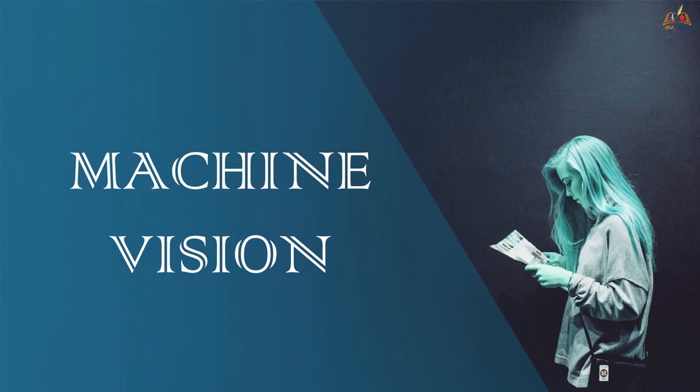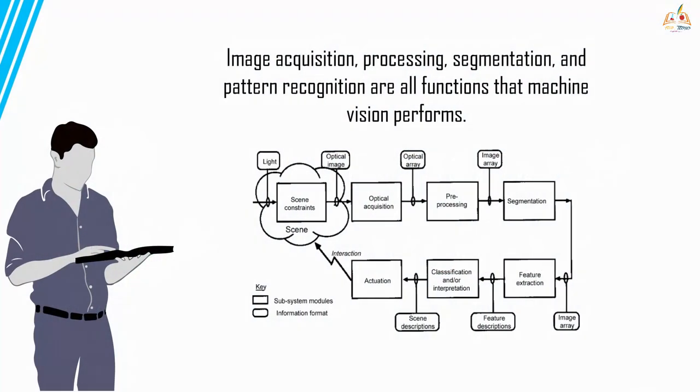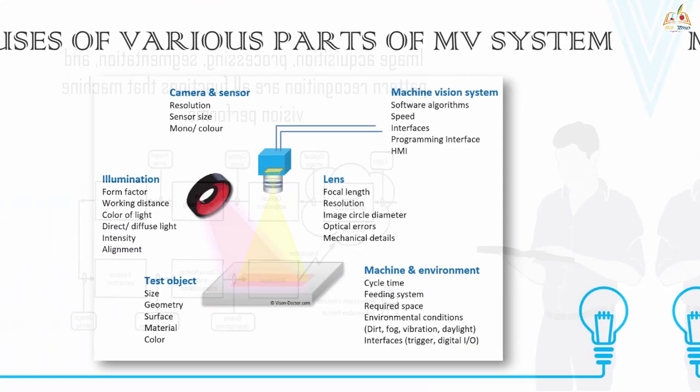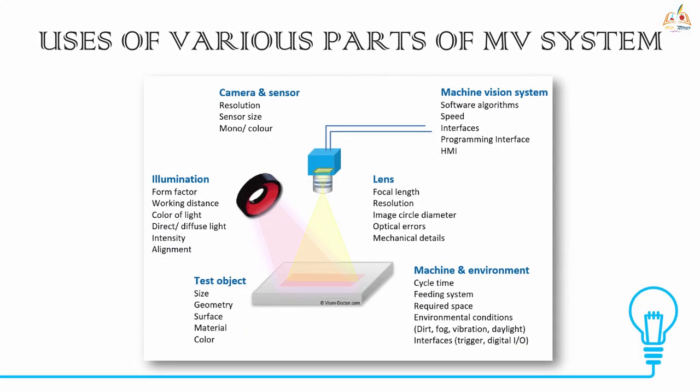Let's enter into our second topic — machine vision. The term 'mechanical eye' would be the perfect name for this. You would have noticed machines employed in the food industry to check the quality of products; these are applications of machine vision. The important functions are image acquisition, processing, segmentation, and pattern recognition.